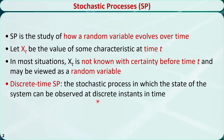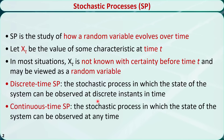If the state of a stochastic process can be observed at discrete time instances, then it is called a discrete time stochastic process. If the state can be observed at any continuous time, then it is called a continuous time stochastic process. In this introductory course, we only discuss discrete time stochastic processes.